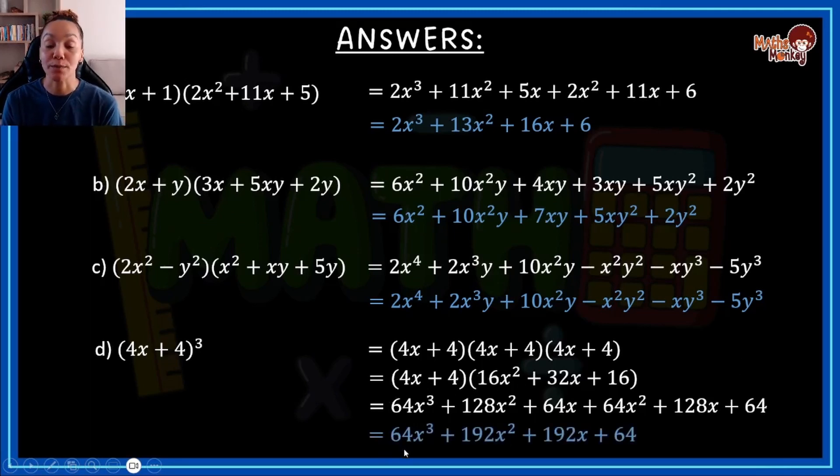And then your final answer would be 64x to the power of 3 plus 192x squared plus 192x plus 64.